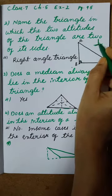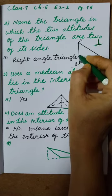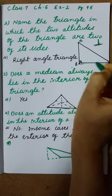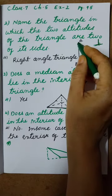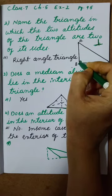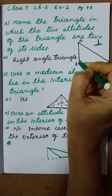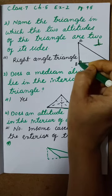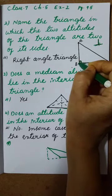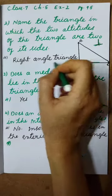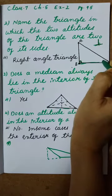Altitude means from a vertex to the opposite side, and it is to be perpendicular. Perpendicular means it should be 90 degrees. See, this is the symbol of the perpendicular. From the vertex to the opposite side, we have to join, and it should be perpendicular. This is the altitude. One altitude and one more altitude — from vertex to opposite side and is to be perpendicular. Here two altitudes are there, that is why the answer is right angle triangle, and these two are also sides.